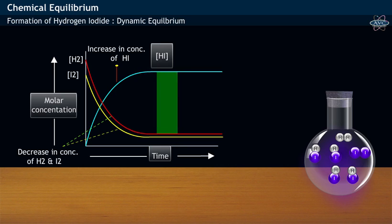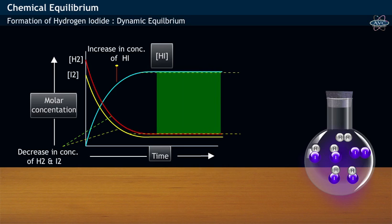The area wherein two curves lie parallel to each other is said to be dynamic equilibrium.